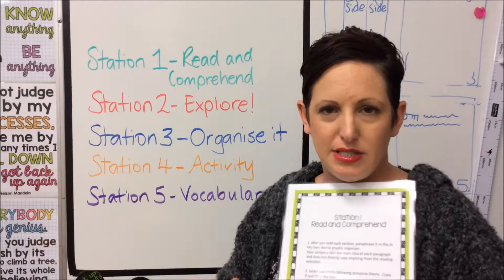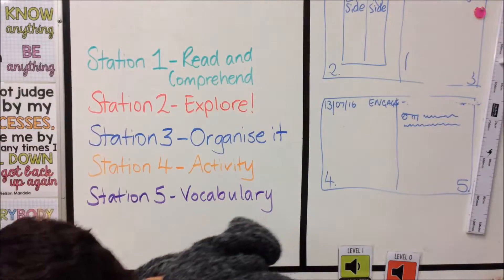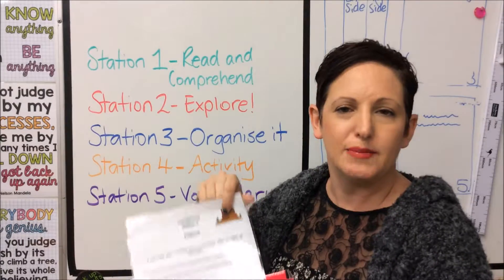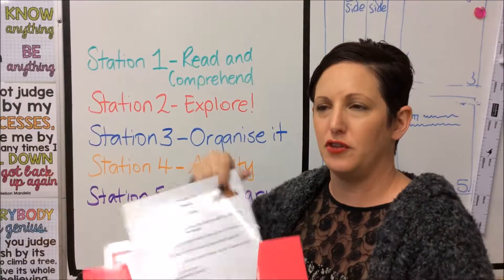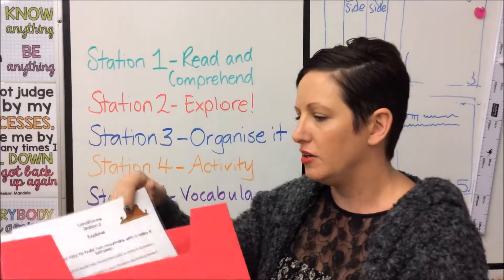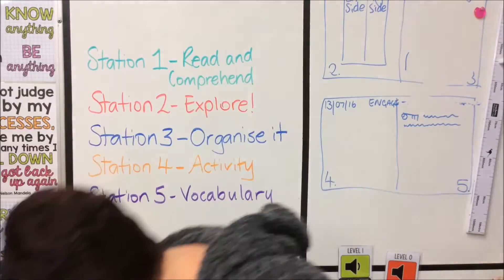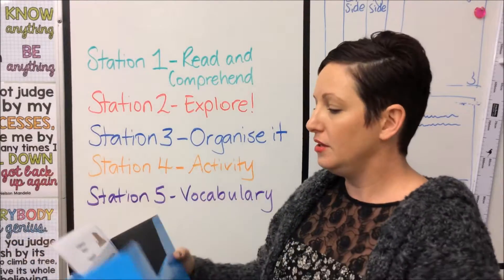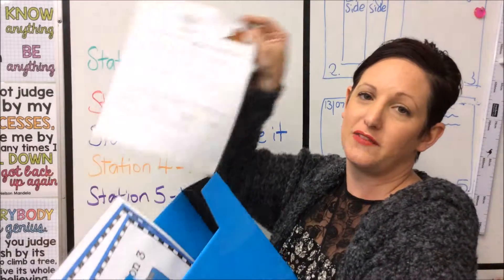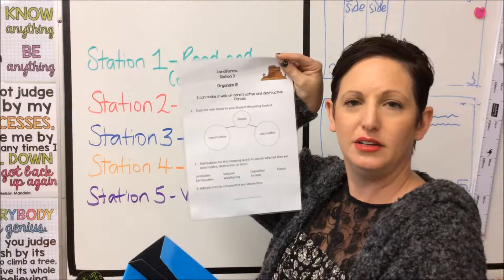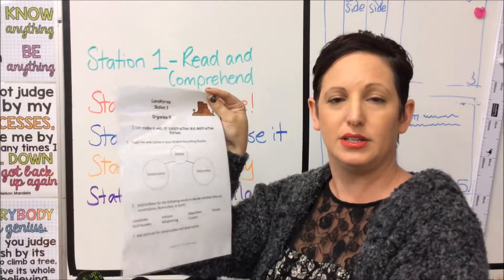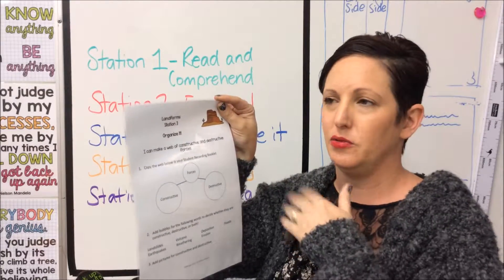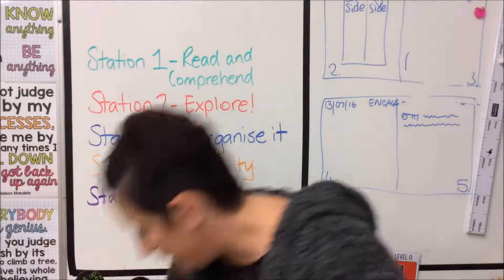Station two is called the explore station, where you will usually make, create, or draw some type of model of the phenomena or topic we are learning about. That's going to be an independent activity as well. Station three is called 'organize it' — it's all about taking information and putting it into a graphic organizer. It has an information sheet for you to follow, and the work will be drawn or written into your book. There's no worksheet for that one.